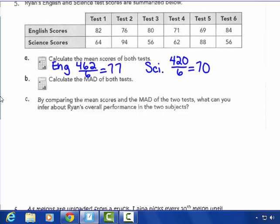Calculate the MAD of both tests. So the MAD for English. English's mean is 77. So the MAD for English is the mean is 77. So English, they are 5 away. 82 is 5 away. 76 is 1 away. I'm figuring the MAD in my blue pen here. 80 is 3 away from 77. 71 is 6 away from 77. 69 is 8 away from 77. And 84 is 7 away from 77. If I add that all up, 5 plus 1 plus 3 plus 6 plus 8 plus 7, I get a total of 30 for English, the deviations from the mean, divided by 6 of them. I get a MAD of 5.